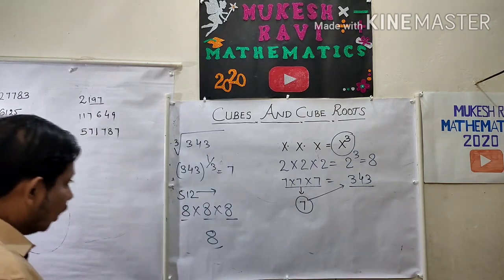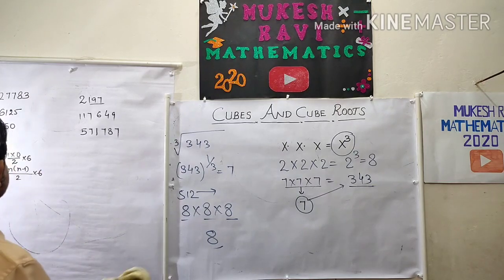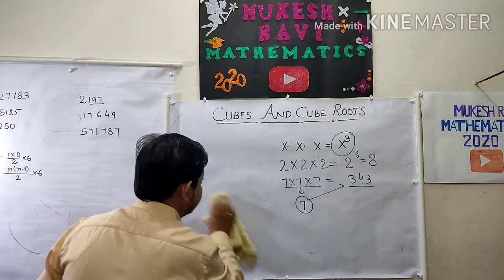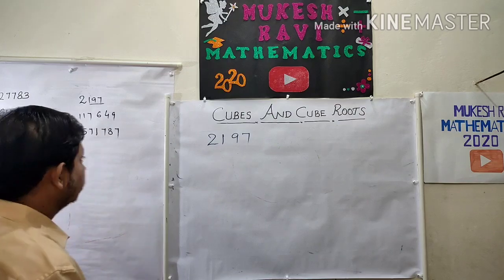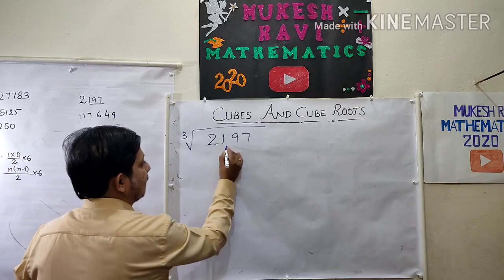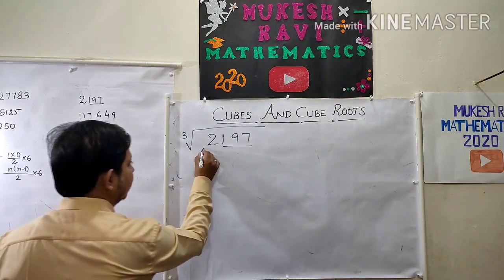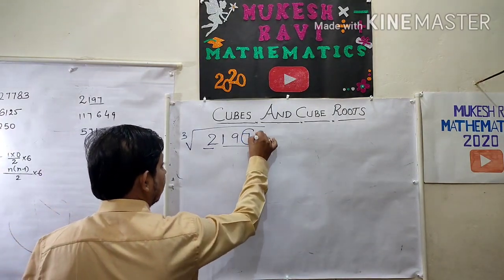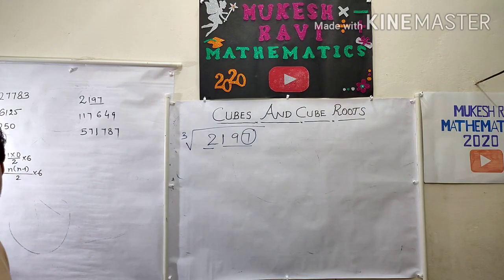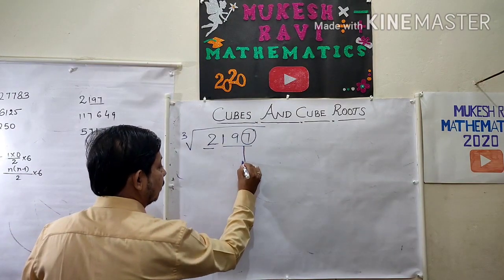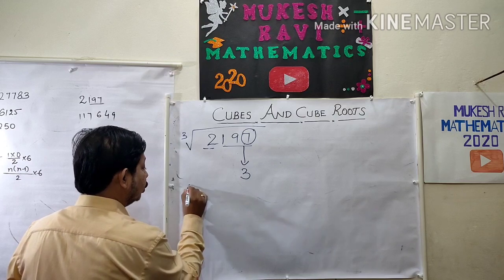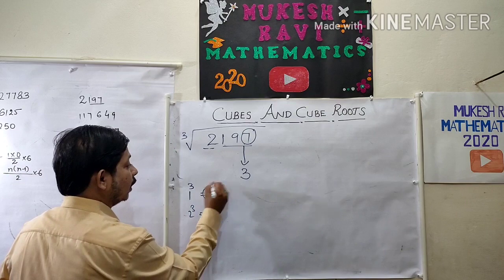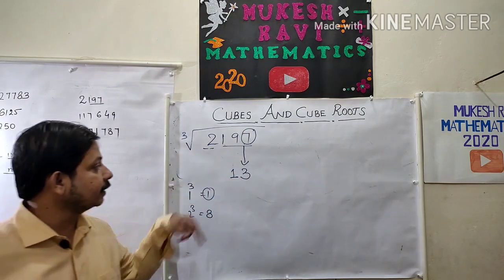Suppose we need to find the cube root of 2197 using a shortcut for multiple choice questions. Split 2197 into the last 3 digits (197) and the remaining digit (2). Check the last 3 digits — unit digit is 7. Whenever 7 is there, the cube root ends with 3 only. So the unit digit is 3. Then check the remaining part: 2 is between 1³ = 1 and 2³ = 8, so the lesser value is 1. Therefore the cube root of 2197 is 13.